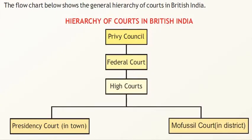Let us look at the hierarchy of courts in British India through a flowchart representation. At the topmost is the Privy Council, followed by the Federal Court and High Courts. The Privy Council is the court that looks after cases related to the provinces. Federal Courts are courts existing for the provinces in India. High Courts are courts not under the Privy Council or the Federal Court but exist for the provinces and have their own judicial authority. The High Courts are further subdivided into the Presidency Court in town and the Mofussil Court in the district.